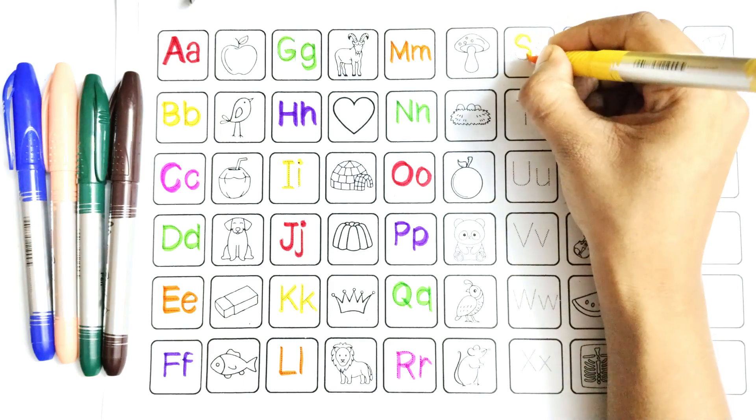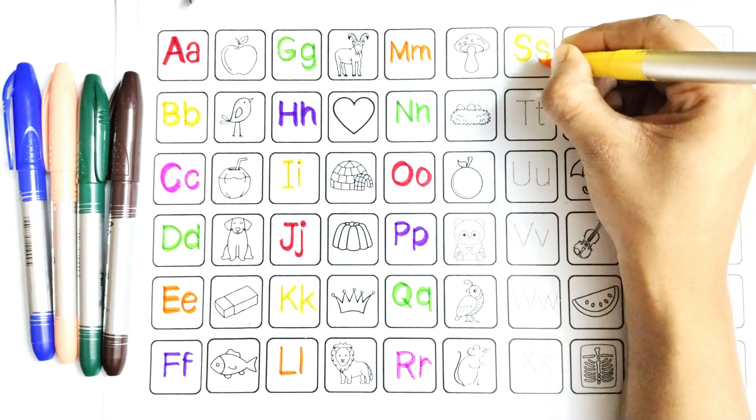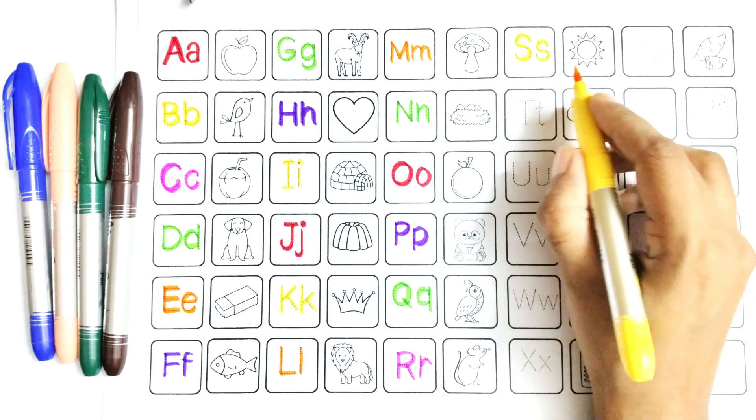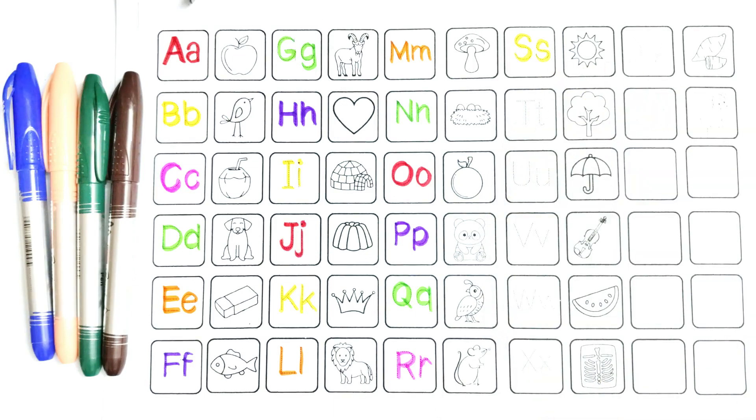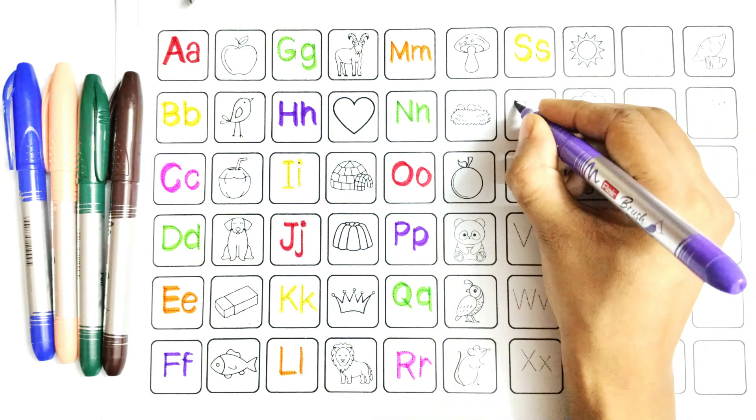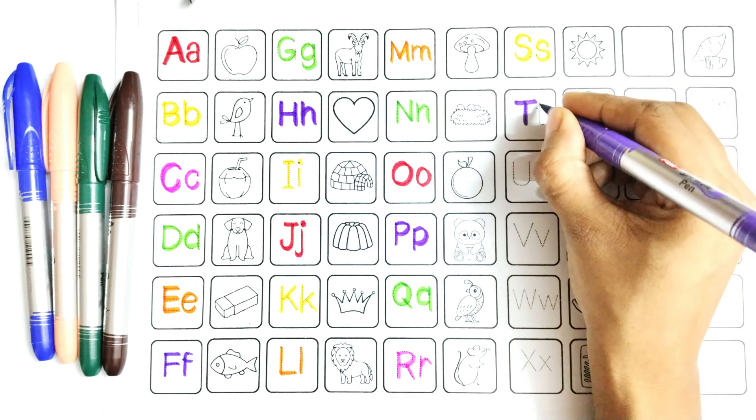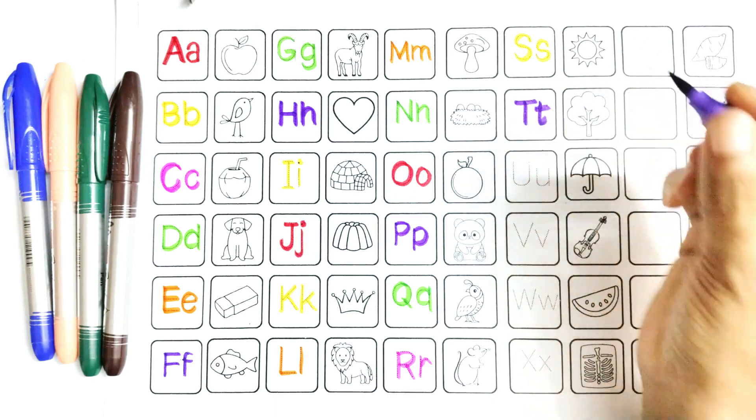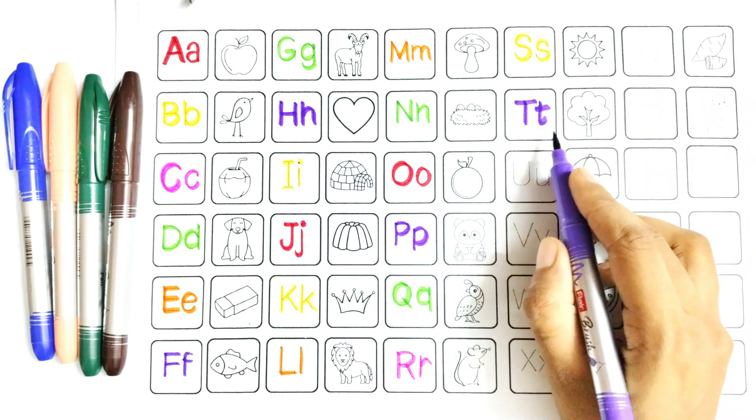S, say with me: S, S is for sun. T, say with me: T, T is for tree.